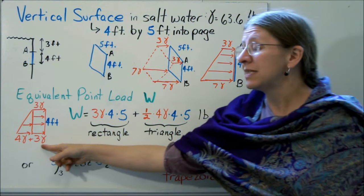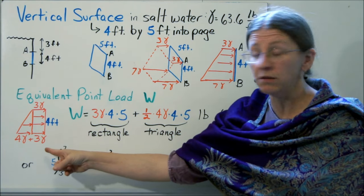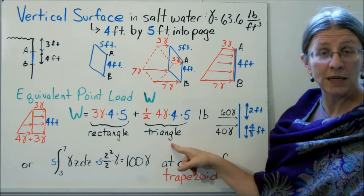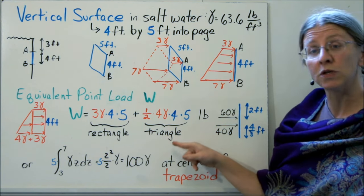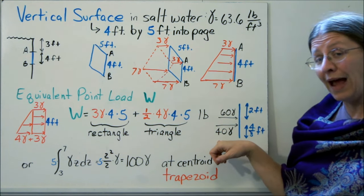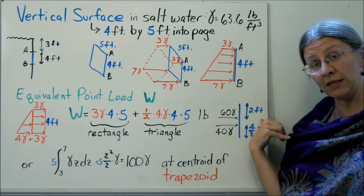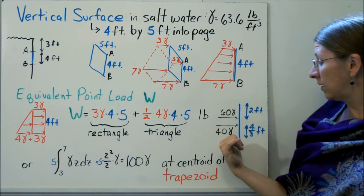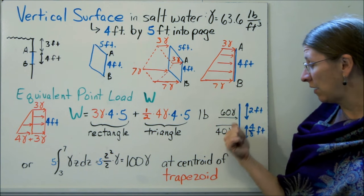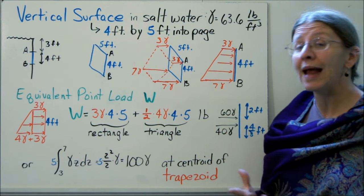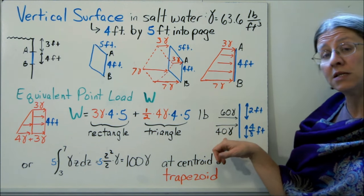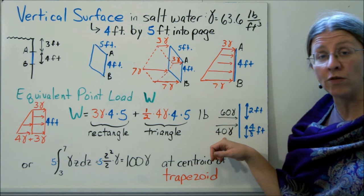My equivalent point load is the area here, and I can break this up into a rectangle and a triangle. So my rectangle is 3γ times 4 times 5. My triangle is 1/2 base times height, 1/2 times 4γ times 4 times 5. That gives you 2 loads and where they act. The rectangle will act 2 feet down because it's a rectangle. The triangle will act a third of the way up from the bottom because it's a right triangle. So you'll have 60γ here and 40γ there. Now if you want to, you can add this up. You'll have 100γ and it will act at the centroid of the trapezoid, or you can do an equivalent system so you can find the centroid of where those two things act.